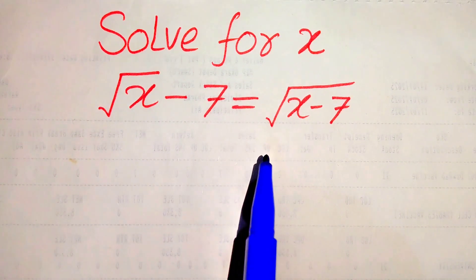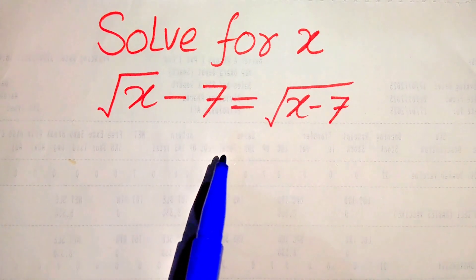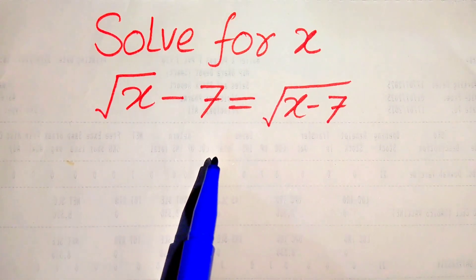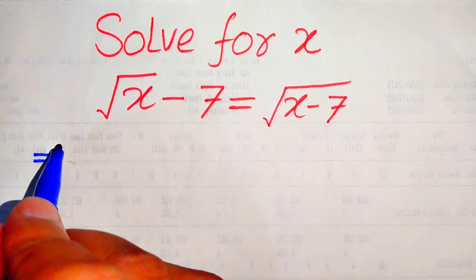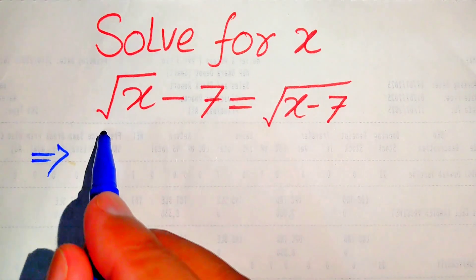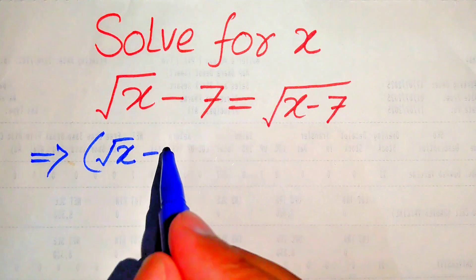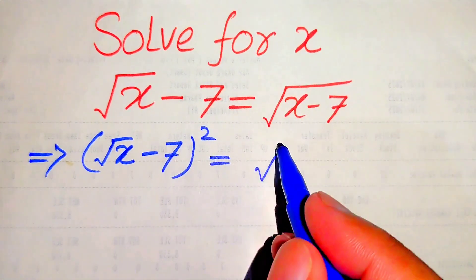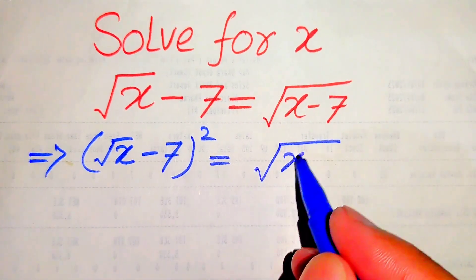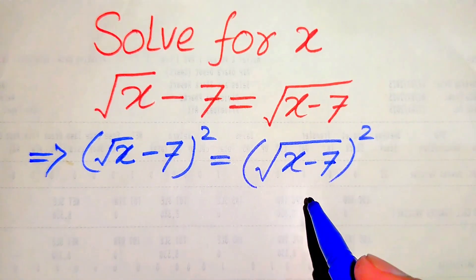In order to find the value of x, first we need to remove these radical signs from both of the sides. To remove these radical signs, we need to take the squaring on both of the sides. When we take squaring, it will be written as square root of x minus 7, whole square, is equals to square root of x minus 7, whole square.